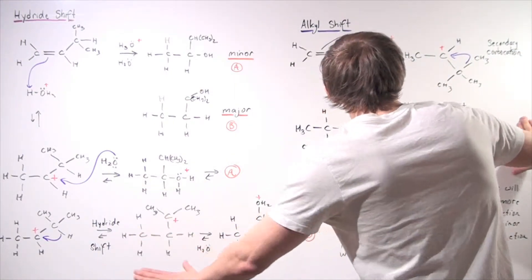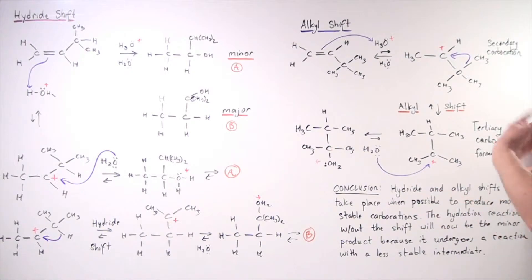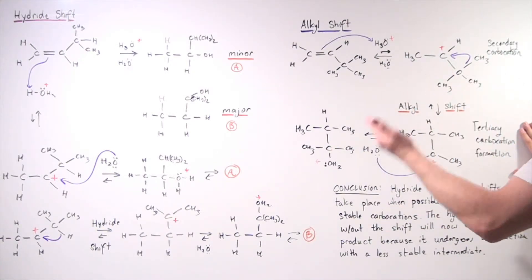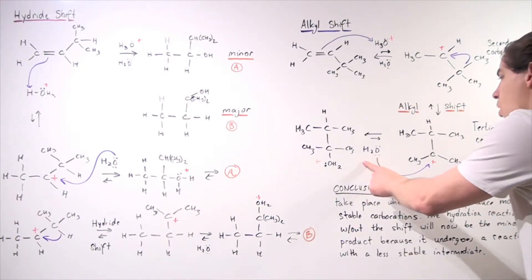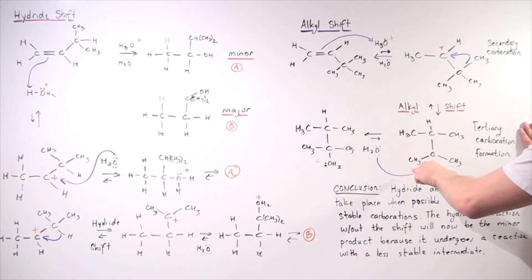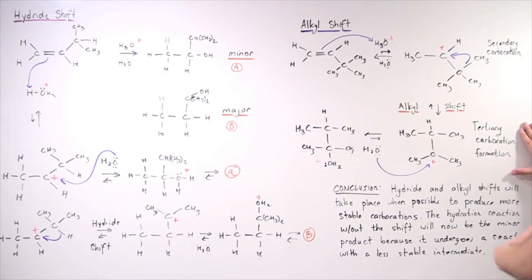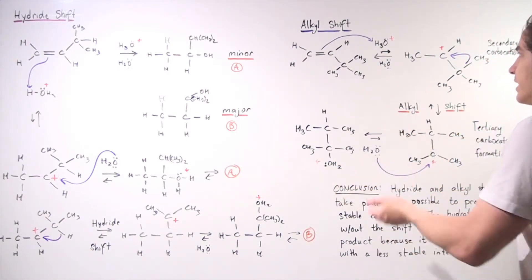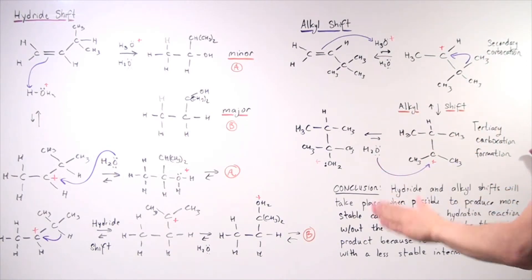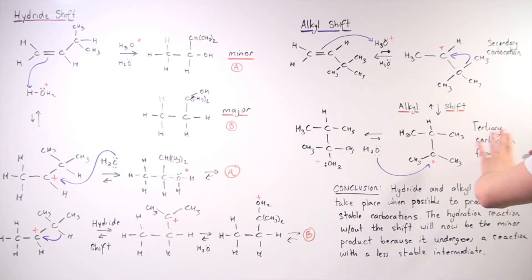For the same reasons as before, this tertiary carbocation is more stable, decreasing the energy and the transition state while increasing the rate of reaction. In the hydration step, water acts as a nucleophile using its lone pair to attack the sp2-hybridized carbon, creating the oxonium ion. In the final step, a water molecule deprotonates the H, regenerating our catalyst and forming the major product — because this alkyl shift leads to a more stable carbocation intermediate.